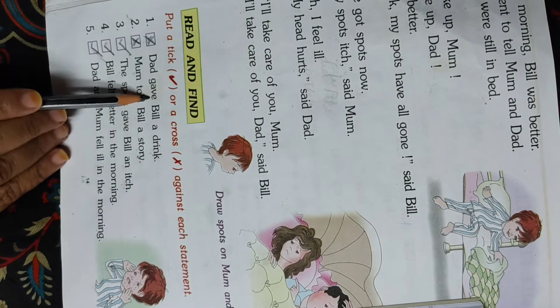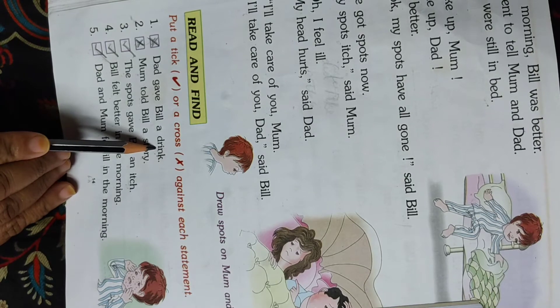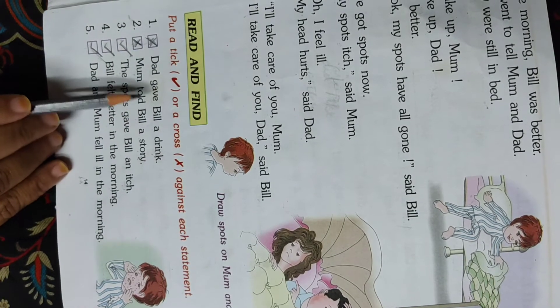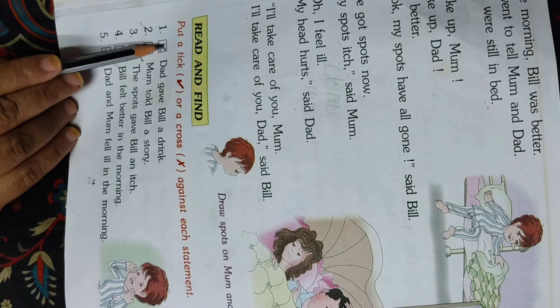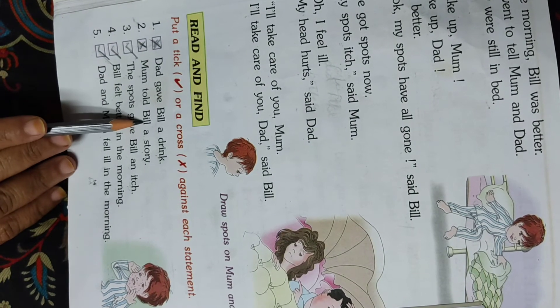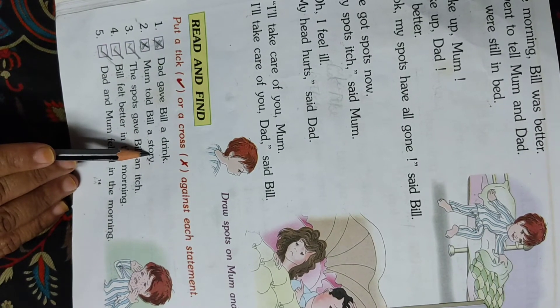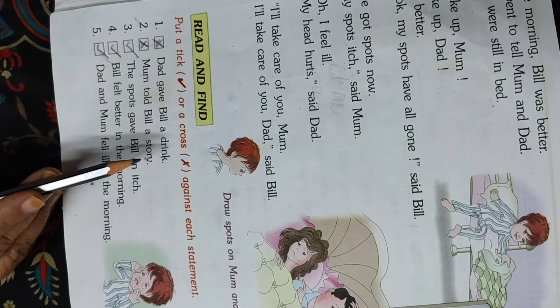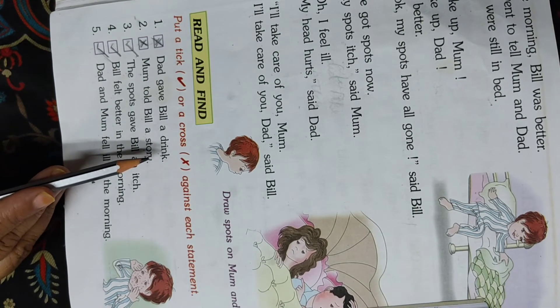Dad gave Bill a drink. Dad gave Bill a drink? No, mom. Wrong. Mom told Bill a story. Who told Bill a story? Mom or dad? Dad. This sentence is also wrong.